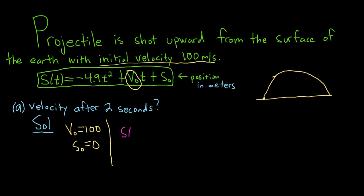S(t) is equal to negative 4.9t² plus 100t. V₀ was 100, and S₀ is 0, so everything looks okay. V₀ is the initial velocity, S₀ is the initial position. So we want the velocity — the velocity is the derivative of the position function.